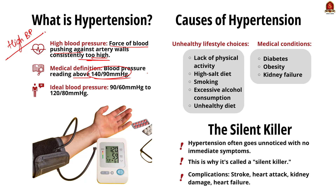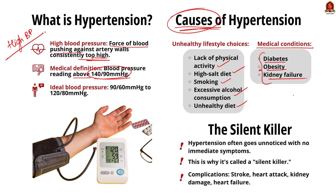What are the causes of hypertension? Mostly unhealthy lifestyle choices like lack of physical activity, high salt diet, smoking, drinking alcohol and eating unhealthy food can cause hypertension. Apart from this, medical conditions like diabetes, obesity and kidney failure can also result in hypertension.